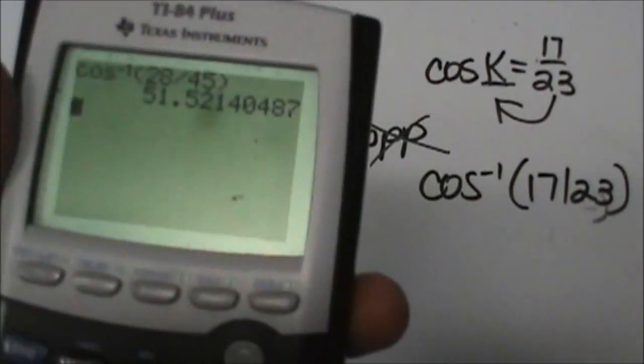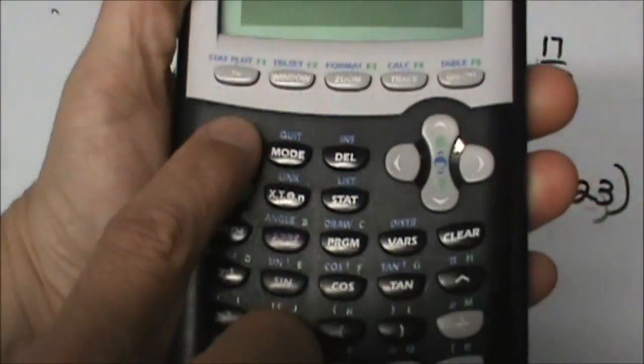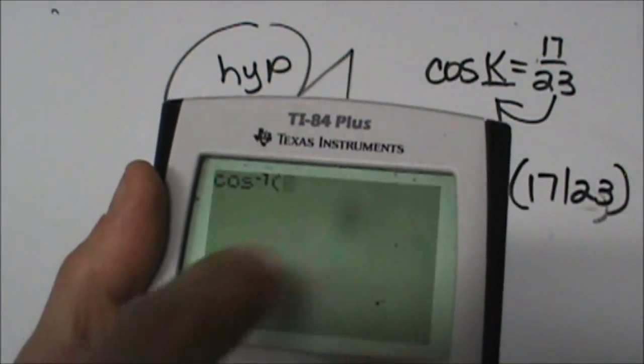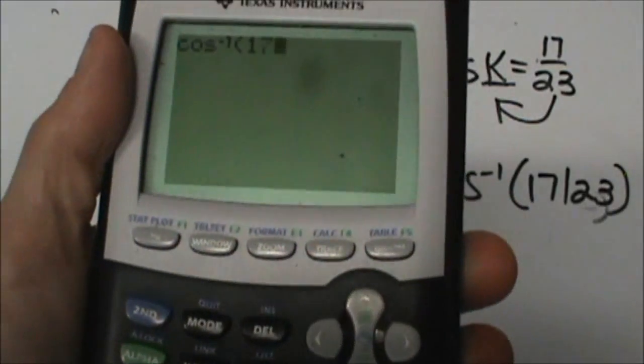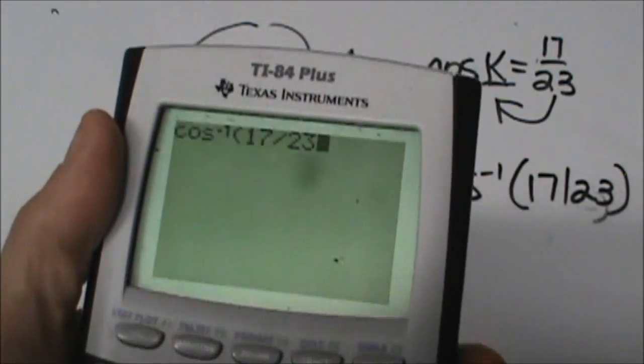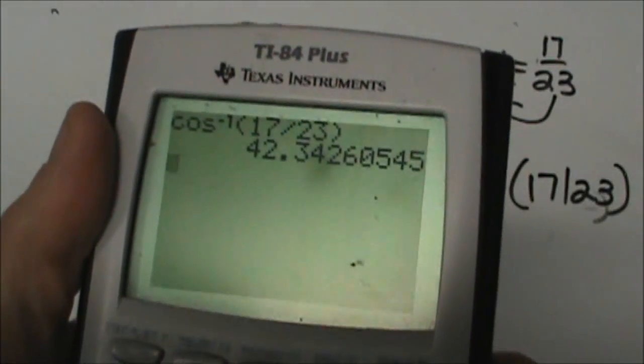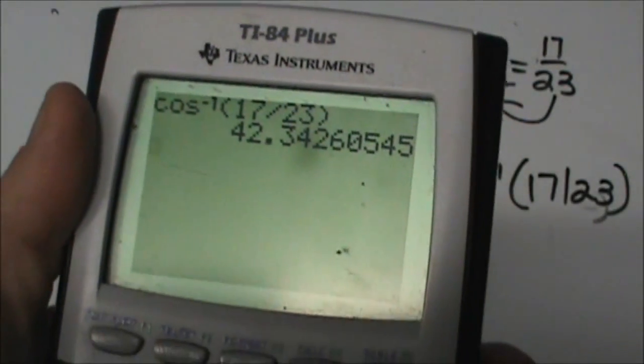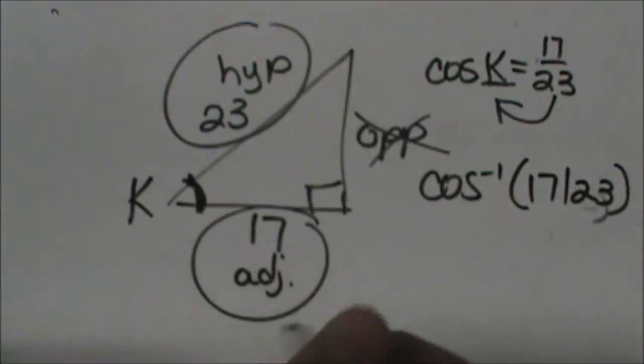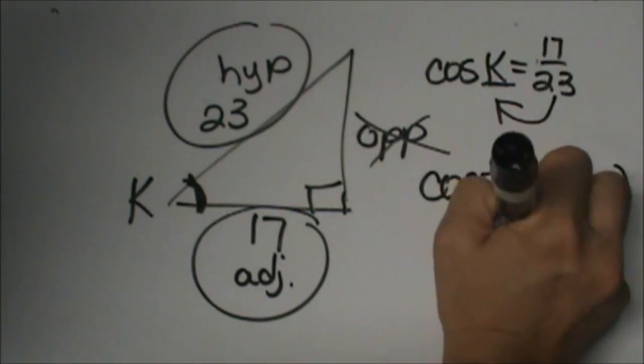Grab your handy dandy calculator and the second function cosine of 17 divided by 23, close, equal. So my angle measure at K is 42.3, so I will round it to the closest degree, which is 42 degrees. So angle K is 42.